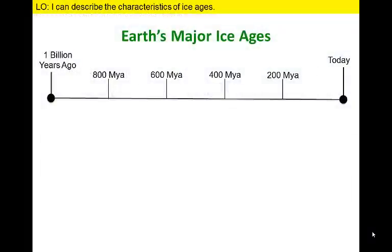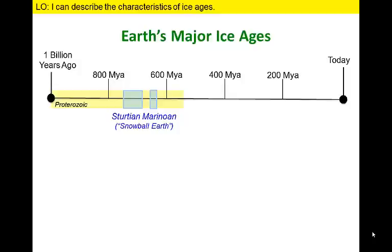We can identify several ice ages during the last billion years of Earth's history. During these times, thick glaciers and ice sheets covered large regions of Earth. Extensive glacial deposits provide evidence of massive ice sheets that may have extended almost to the equator near the end of the Proterozoic Era, creating a condition known as Snowball Earth.